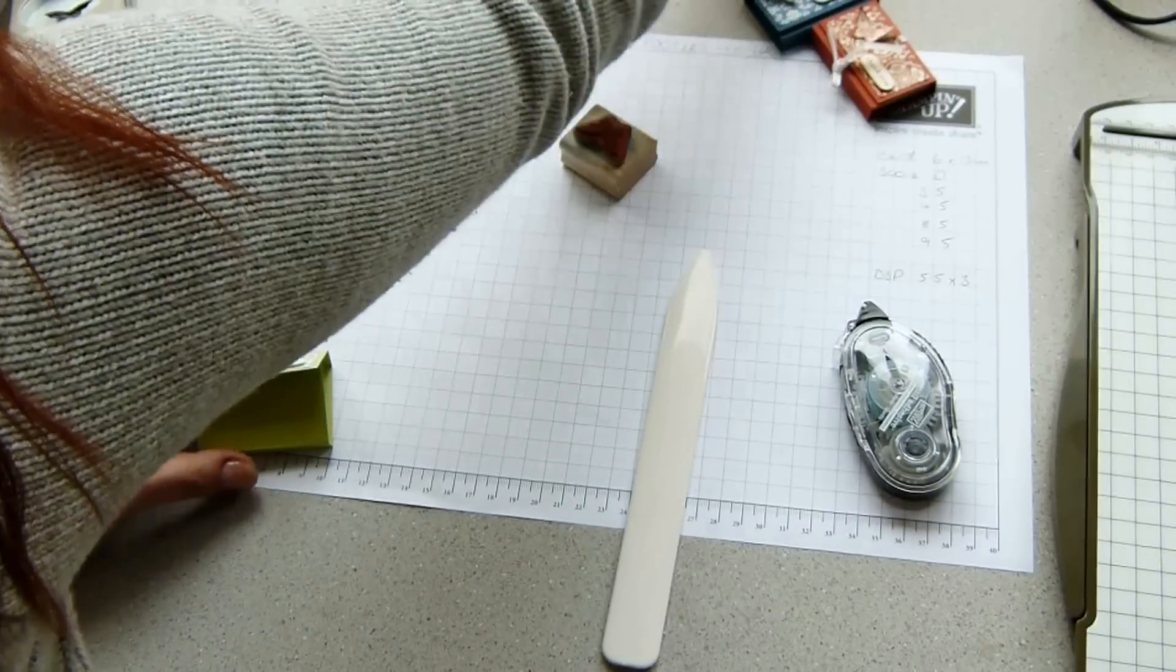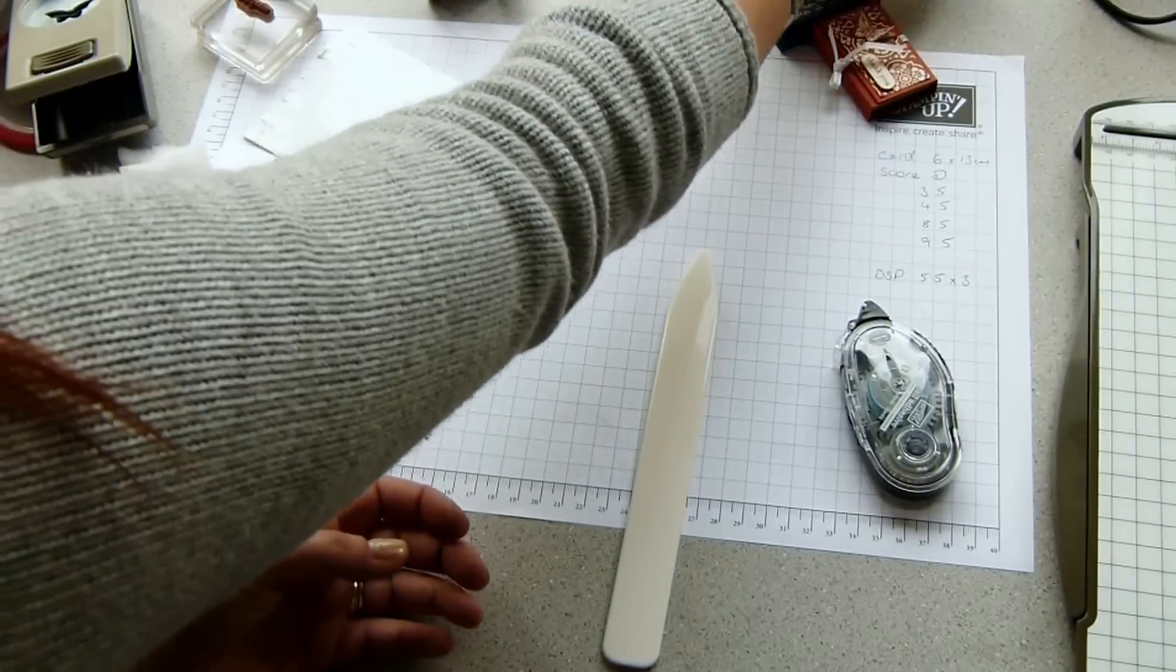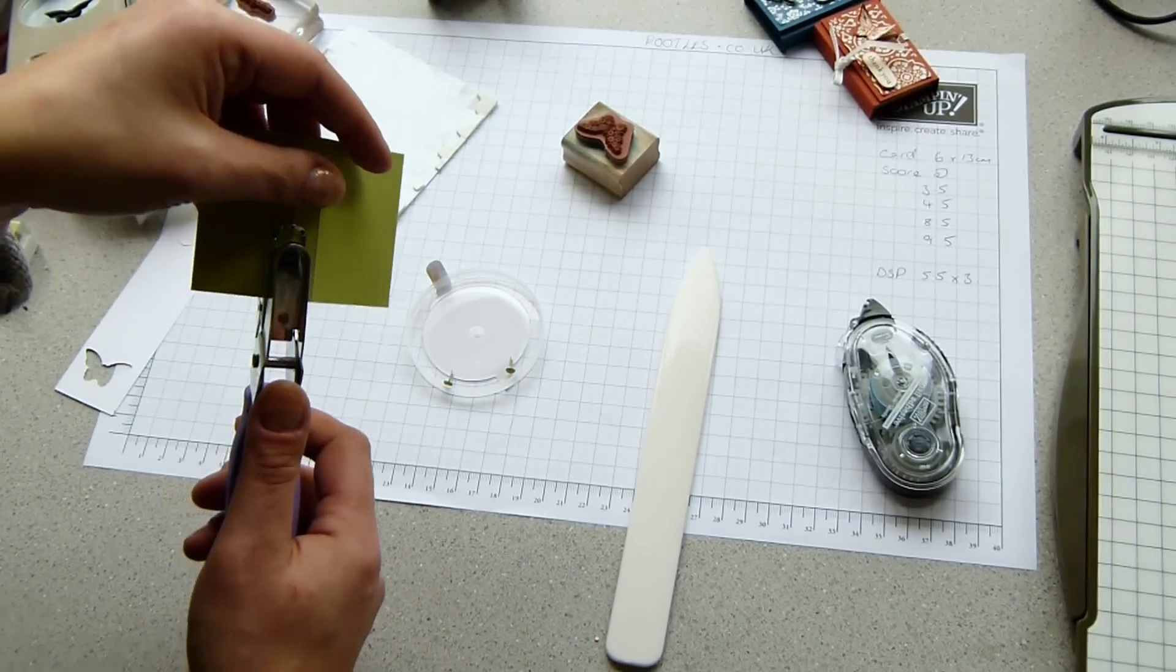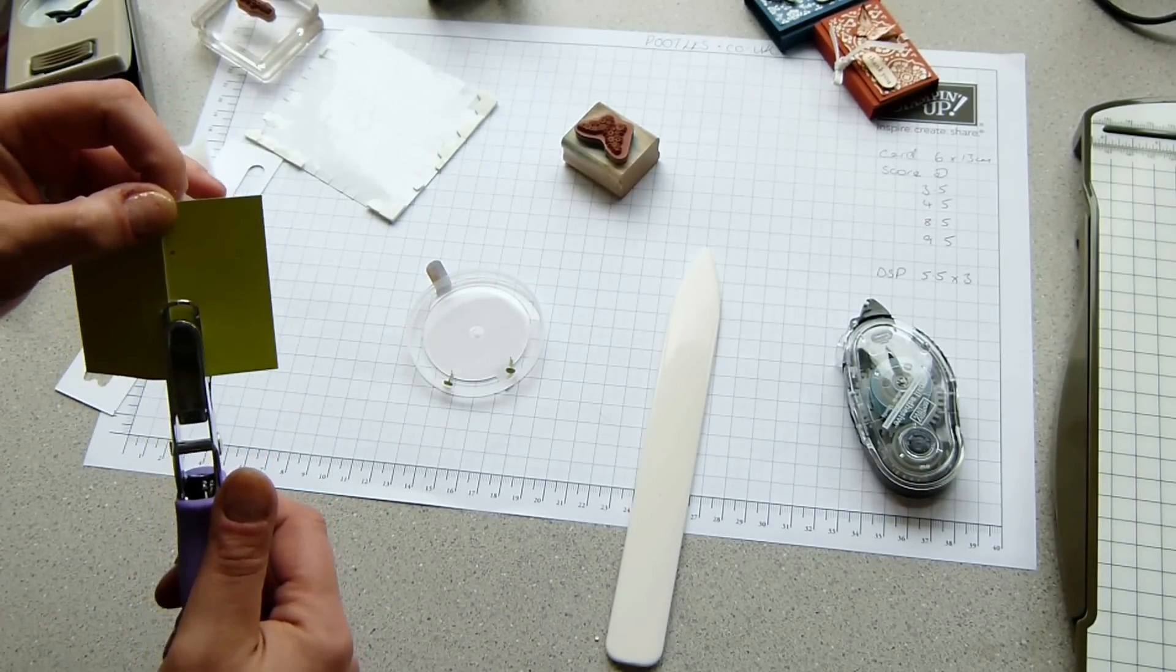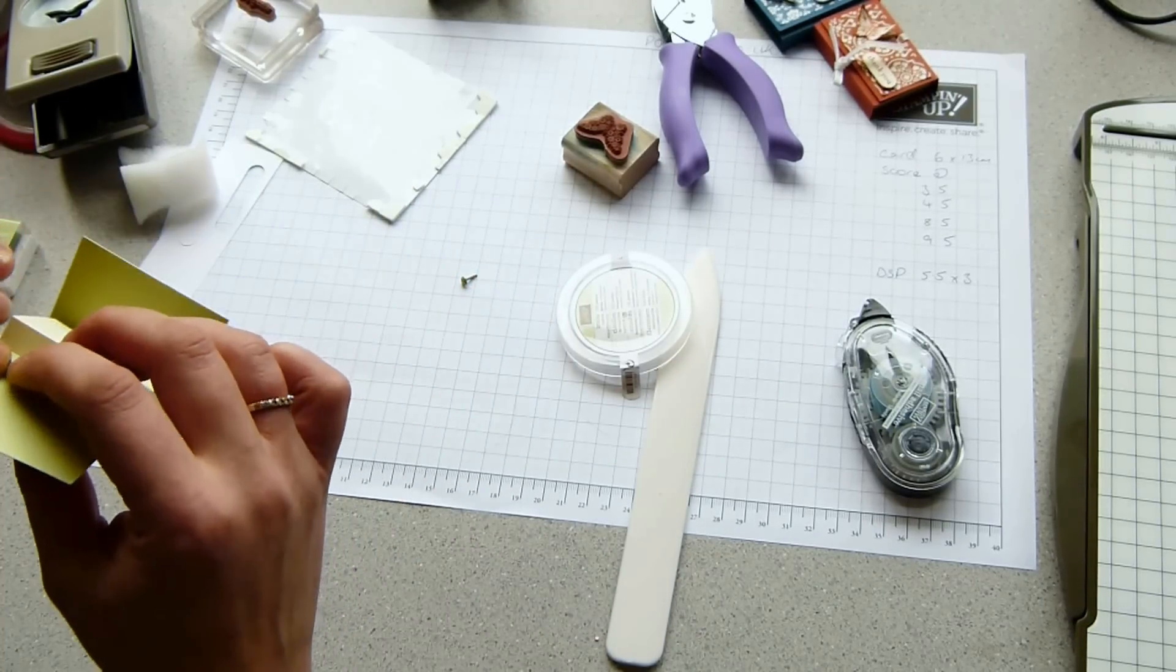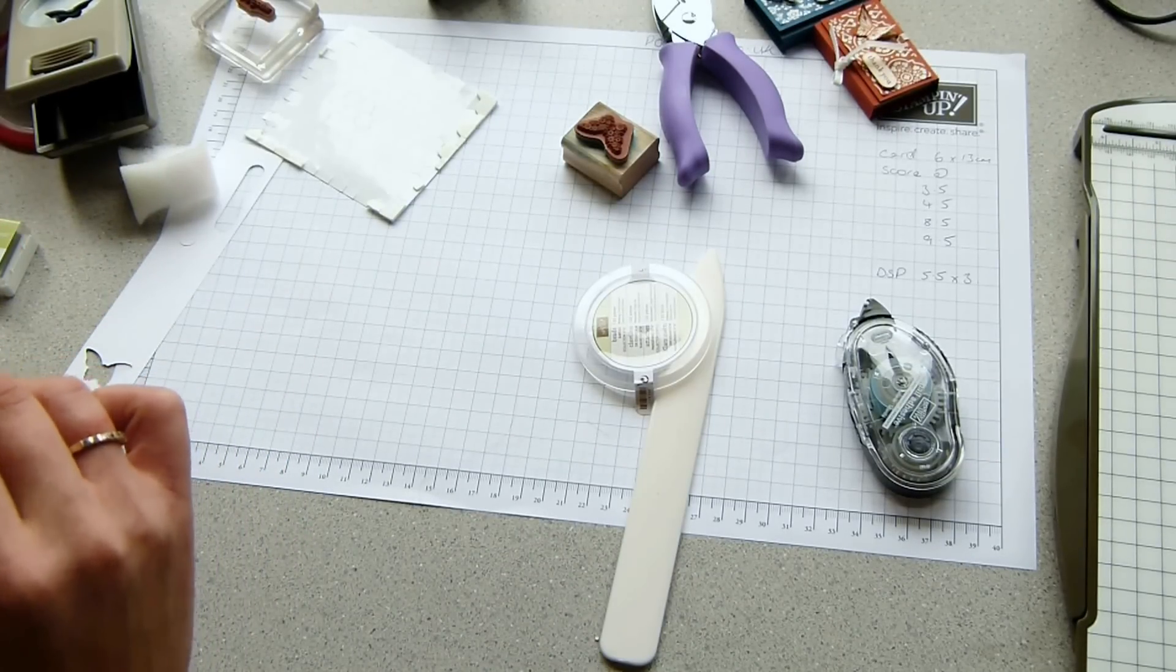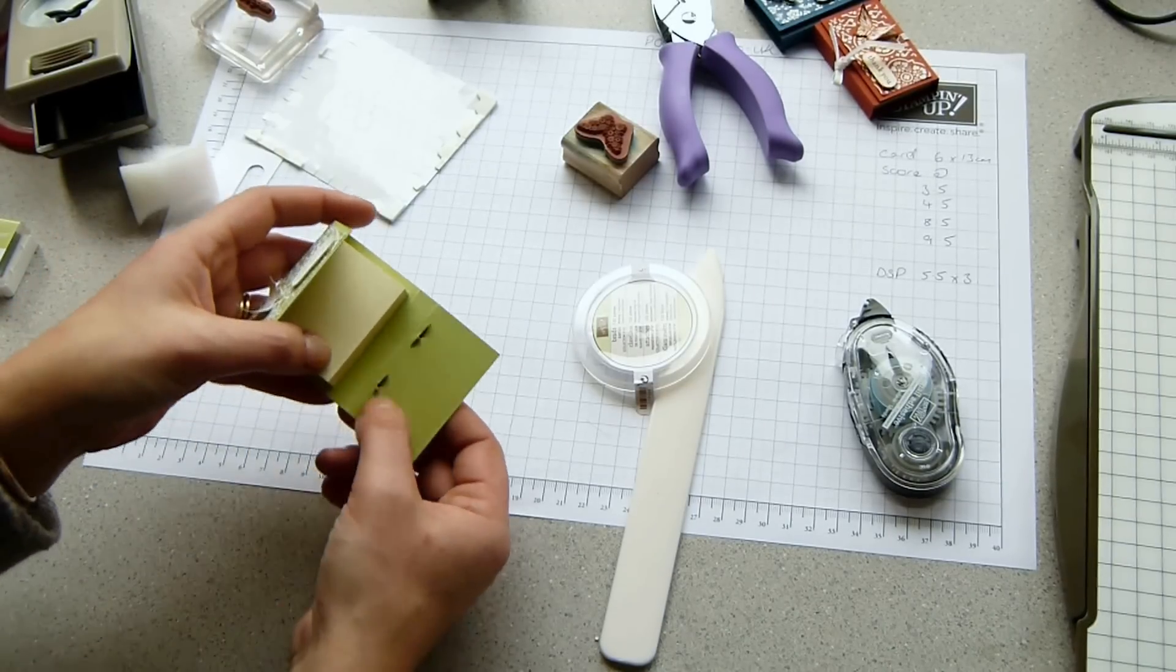And now I want to do the closure. I've got some brads. These are lovely brads. These are Subtles. There's six colors out of the 10 that you get in the Subtles collection. And I'm using the Certainly Celery. So I've got two here ready. And then using my hole punch, this punches out a tiny little hole. And I'm just going to go towards the middle, but only up about a centimeter. You're kind of just eyeballing it really. There's no deep involved measurements going on. Pop the brads through and open them out. And the same on the other side.